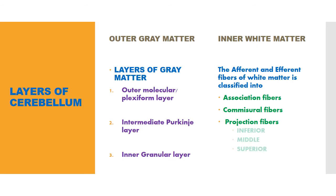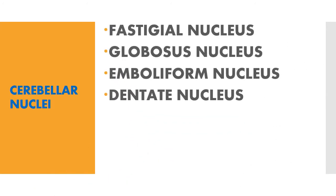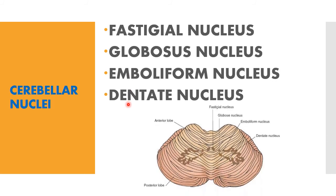The projection fibers are further divided into the inferior cerebellar bundle, middle cerebellar bundle, and superior cerebellar bundle. There are four important nuclei in the cerebellum: the fastigial nuclei, the globose nuclei, the emboliform nuclei, and the dentate nuclei. These nuclei are very important in controlling movements.